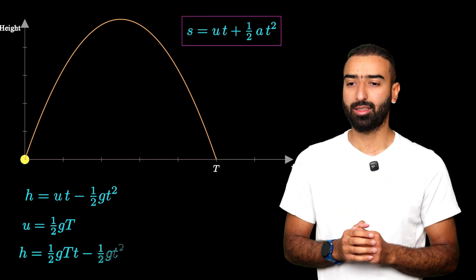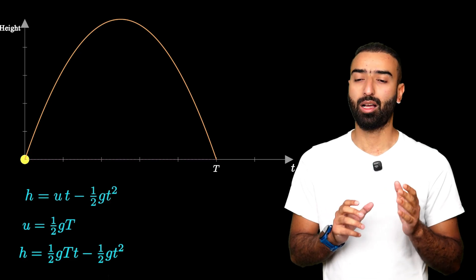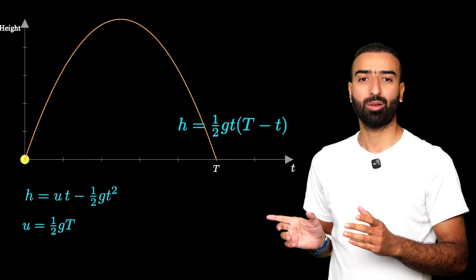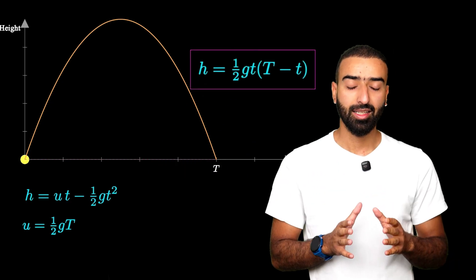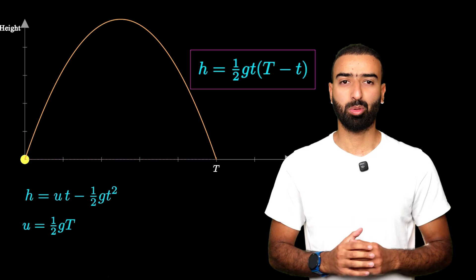the equation I'll get is H equals half GT T minus half GT square. This can be rearranged into this particular form. And that is the equation we were after. And that completely solves the problem.